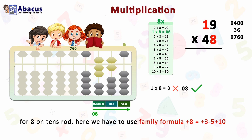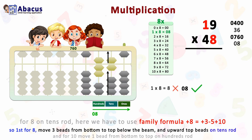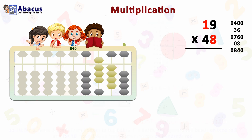For 8 on the tens rod, there are not enough beads, so we use the family formula: plus 8 equals plus 3 minus 5 plus 10. First, on the tens rod, move three beads from bottom to top and move the top bead upward. For the carry of 10, move one bead from bottom to top on the hundreds rod. Now we have 840.